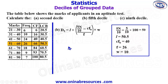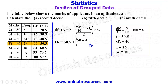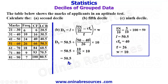Substituting into the formula: D5 = 50.5 + ((50 − 40) / 26) × 10 = 50.5 + (10/26) × 10 = 50.5 + 3.85 = 54.35. So the fifth decile of this distribution is 54.35.